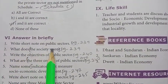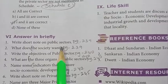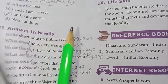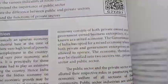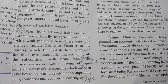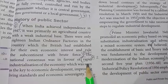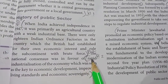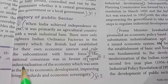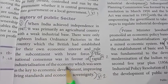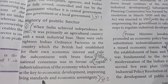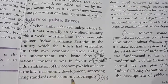Second one: what does the society want? Refer to page number 239. The answer is from the last paragraph — four lines: rapid industrialization of the economy, which was seen as the key to economic development, improving living standards, and economic sovereignty.